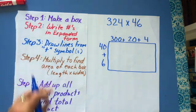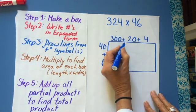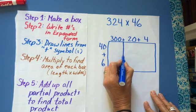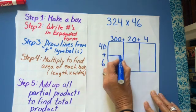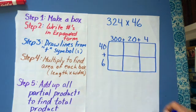The third step is to draw lines from the plus symbol. So I'm going to draw a line here, draw a line here, and I also have to draw a line here. So now I have six boxes. So I'm going to find six partial products.